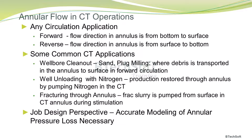During coil tubing operations, any application that involves circulation includes flow through the annulus. In forward circulation, flow direction in the annulus is from bottom to surface, whereas in reverse circulation, flow direction is from surface to bottom in the annulus. Some common example coil tubing applications are listed here. In well bore clean out — involving sand clean out, plug milling, or drill outs — debris is transported in the annulus to the surface in forward circulation.